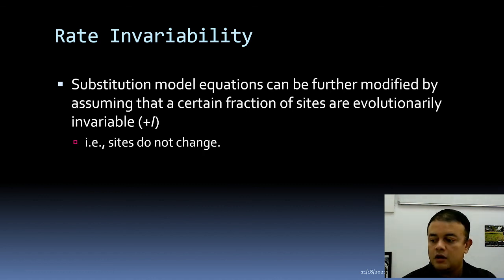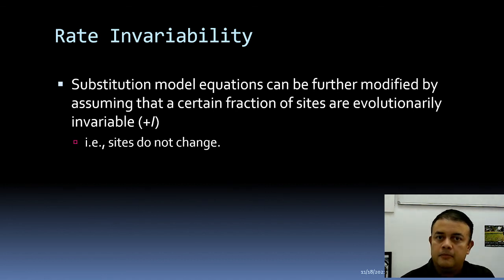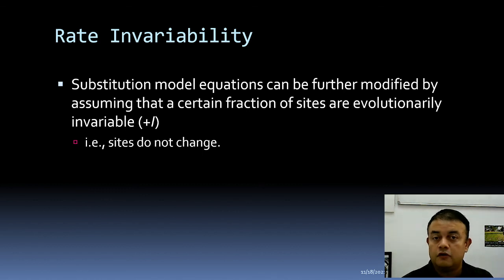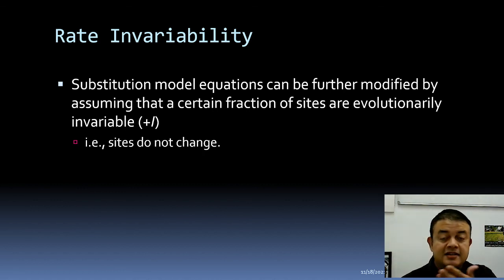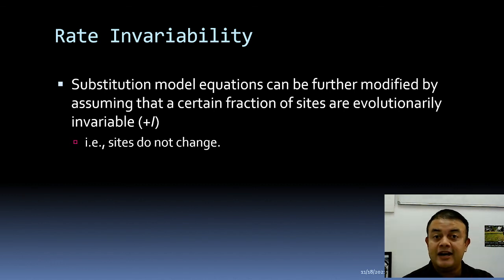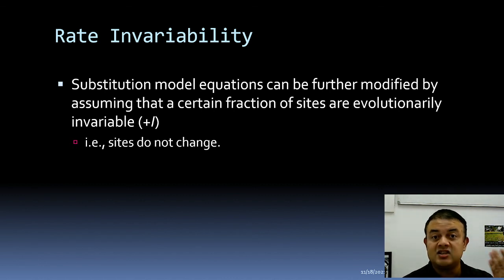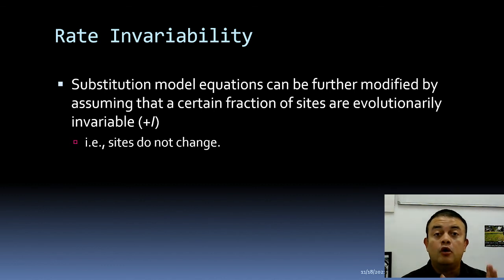Choosing a model because an earlier paper on the same organism used it — for example HKY+G for moss phylogeny — is very bad practice. The rational approach is to use a statistical test to determine which model is optimal for your data. This is called model selection, which will be explained in the next module.